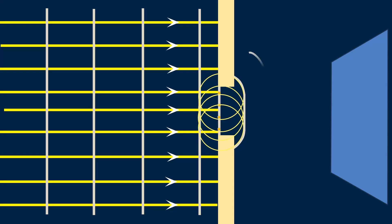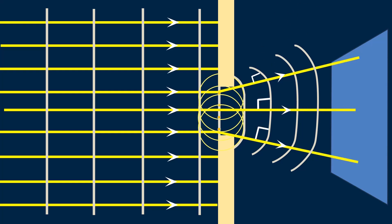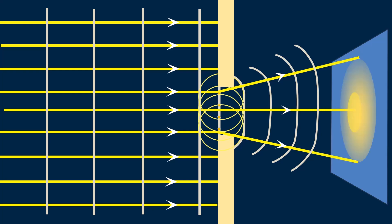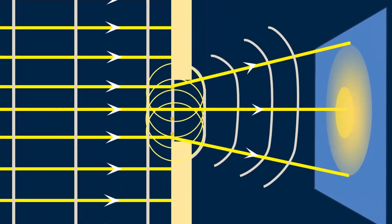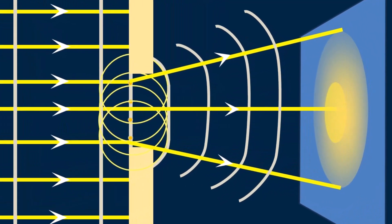The new wavefront after passing through the hole looks like this — it continues with curved edges. So the light rays bend at the edges and spread out, forming a larger spot on a screen placed behind the hole. In this way, Huygens' theory explains why light rays spread out around the edges of a small hole.